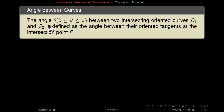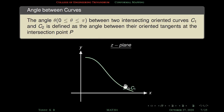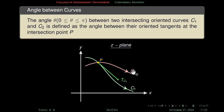Next we define the angle between oriented curves. The angle θ between two intersecting oriented curves c₁ and c₂ is defined as the angle between their oriented tangents at the intersection point p. We consider the oriented tangent in the direction of c₁ and the oriented tangent in the direction of c₂, and the angle between c₁ and c₂ at p is the angle between these tangents. We measure this angle either in the anticlockwise direction or the clockwise direction — anticlockwise is considered positive and clockwise is negative.